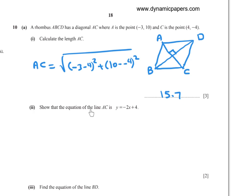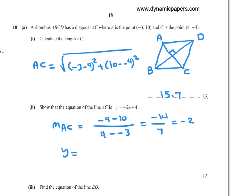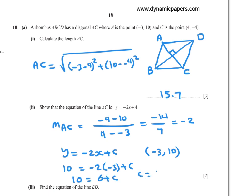Part (a)(ii): Show that the equation of line AC is y equals negative 2x plus 4. Find the gradient: (negative 4 minus 10) over (4 minus negative 3) equals negative 14 over 7 equals negative 2. Equation: y equals negative 2x plus c. Substitute point A (negative 3, 10): 10 equals negative 2 times negative 3 plus c, so c equals 4. Therefore y equals negative 2x plus 4.